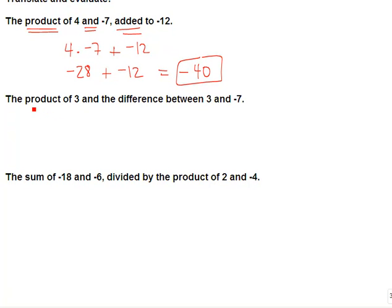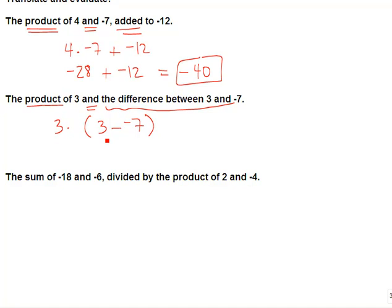Next example: the product of three and the difference between three and negative seven. Product means multiplication; the word 'and' separates the two things to multiply. We multiply three times the difference — difference means subtraction — so three minus negative seven. We need parentheses since three is multiplied by all of that difference: three times (three minus negative seven). Simplify the parentheses first: the double negative turns to plus, so three plus seven is ten. Ten times three is thirty.